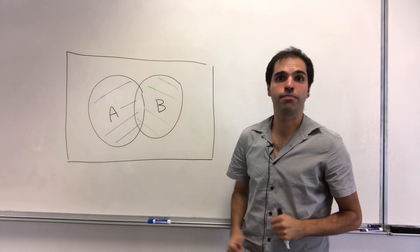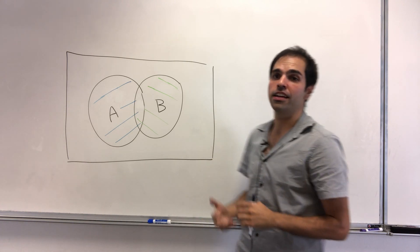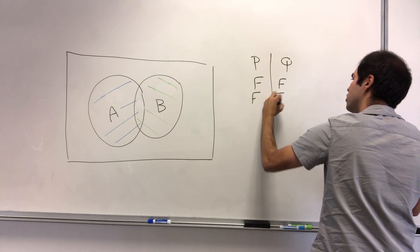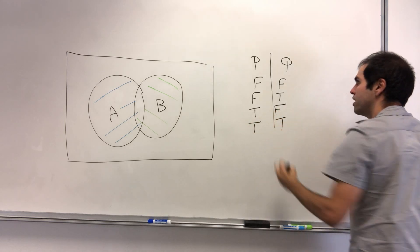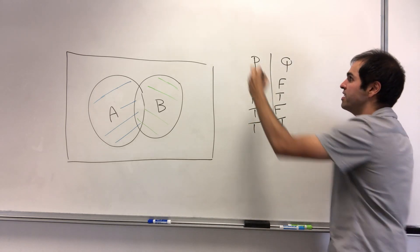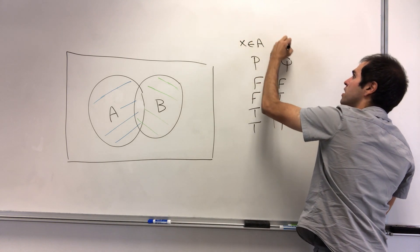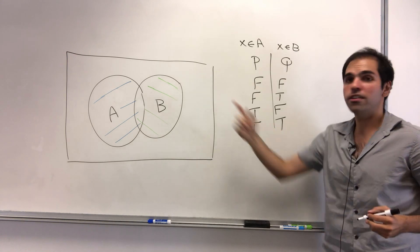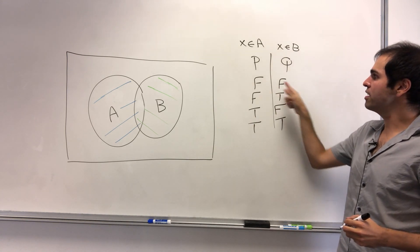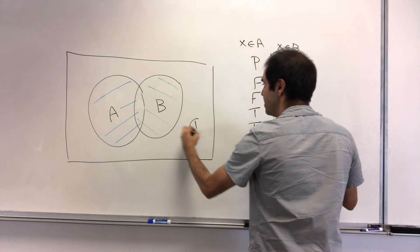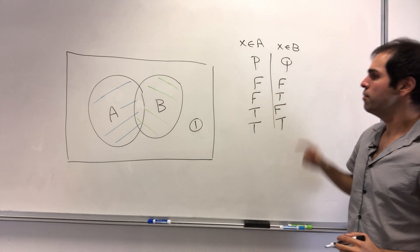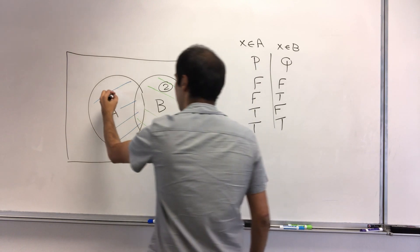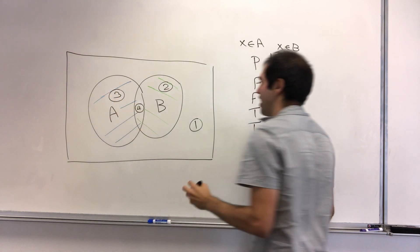There's a nice relationship between Venn diagrams and the classical truth table PQ — false false, false true, true false, and true true. If P is the proposition 'X is in A' and Q is the proposition 'X is in B', then each line of the table corresponds to a region in the Venn diagram. False false means X is in neither A nor B, false true means X is only in B, true false means X is only in A, and true true means X is in both A and B.